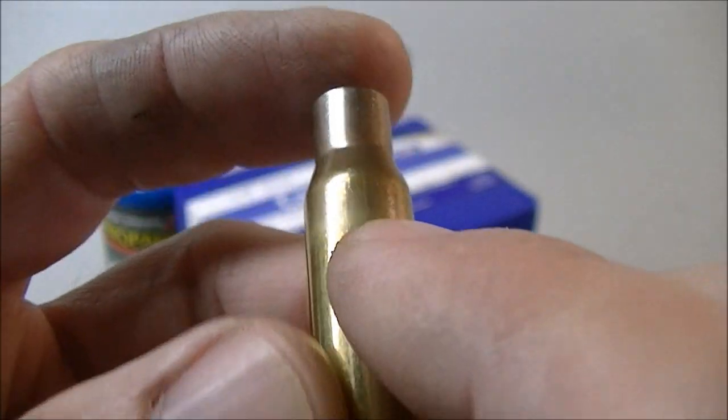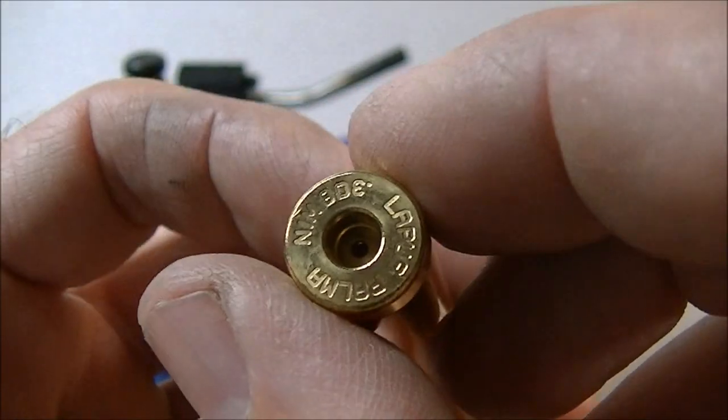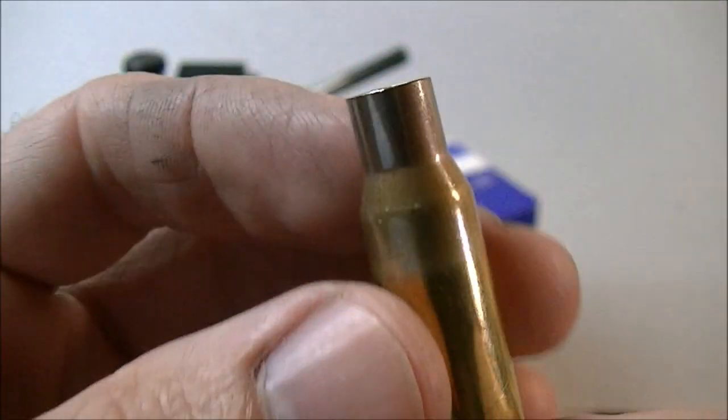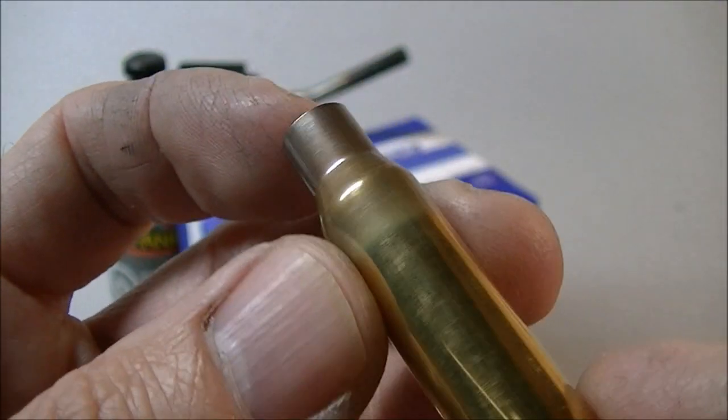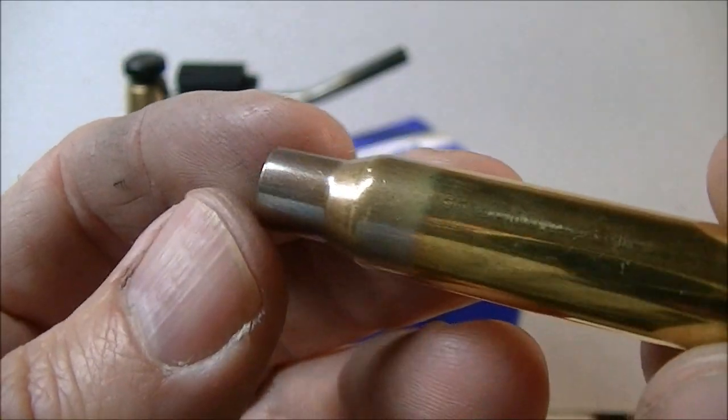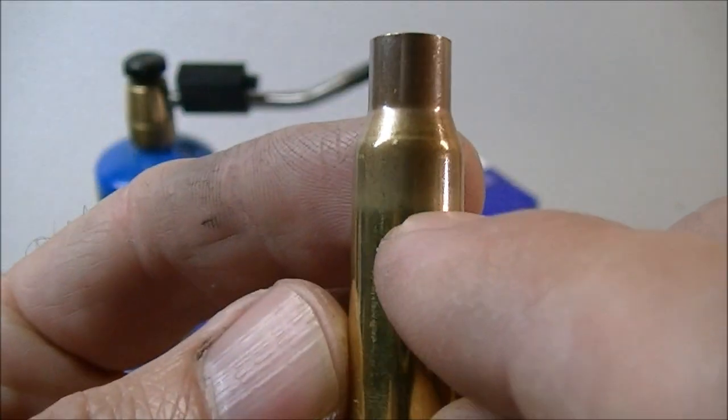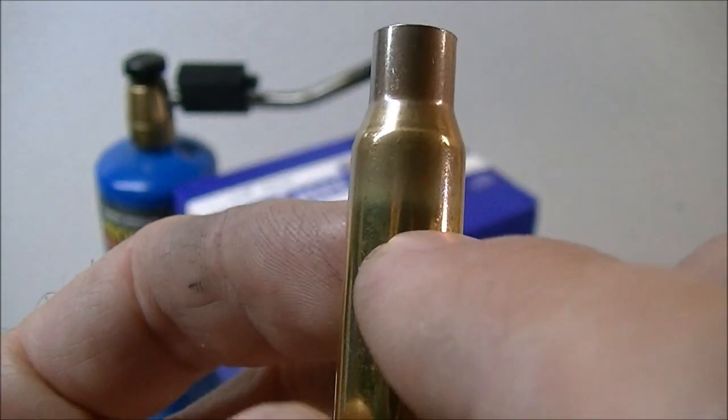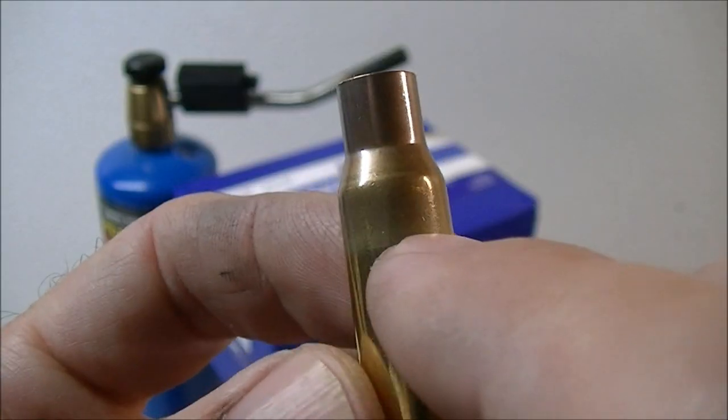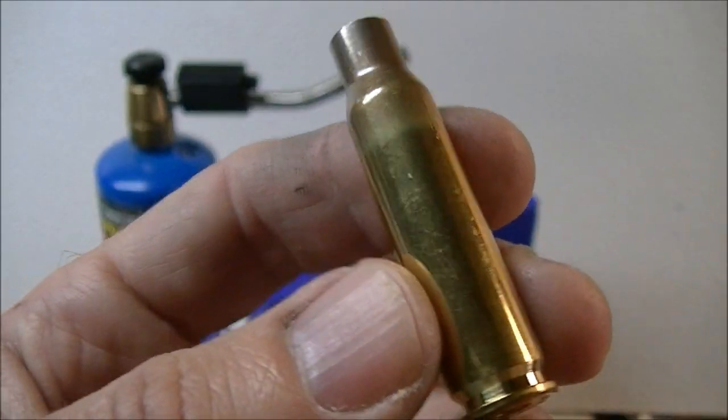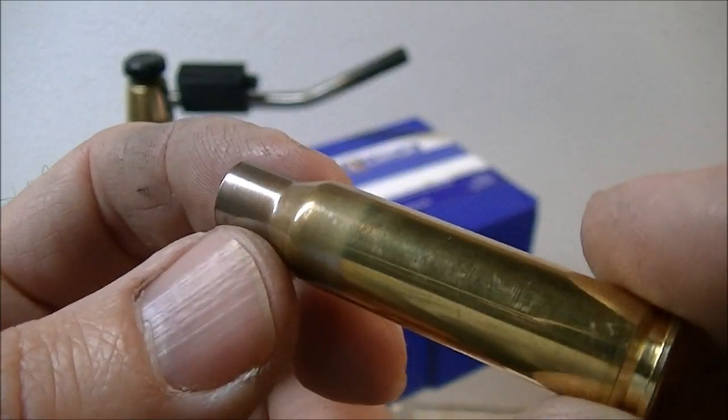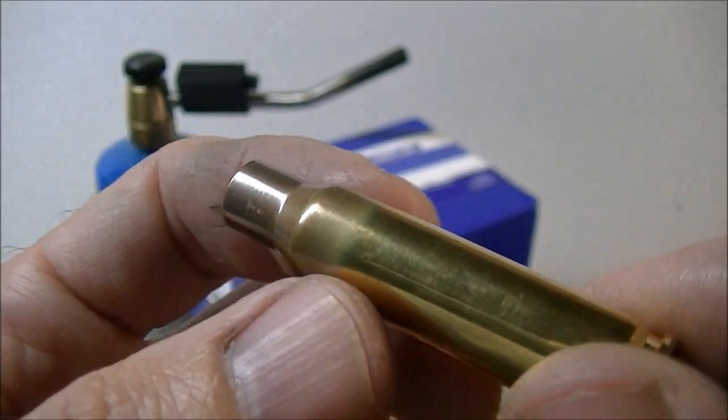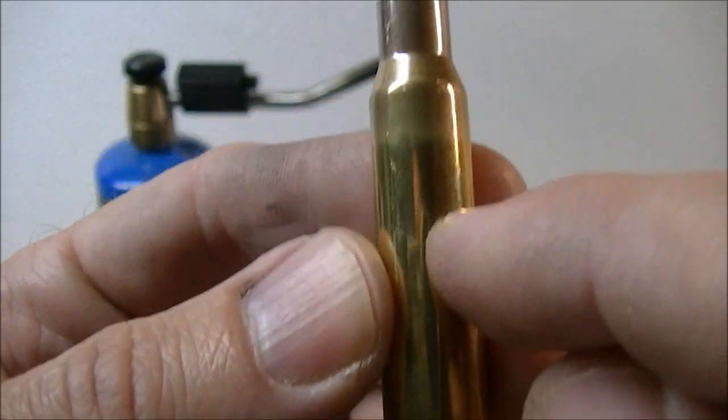This is a Lapua 308 Winchester Palma case and it's an example of a nicely annealed or stress relieved cartridge case. You can see the junction just below the shoulder here, there's a color change, and that color change is indicative of the annealing or heat treating process that this brass went through. Brass should be fairly hard in the case head area to withstand the pressure, but it should be softer at the front.